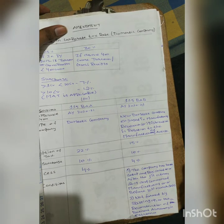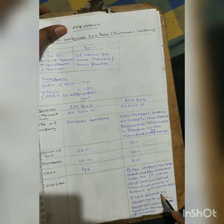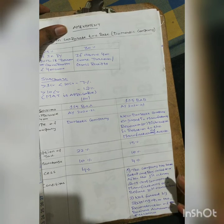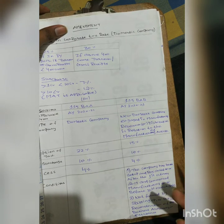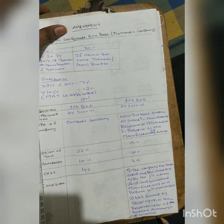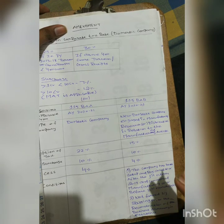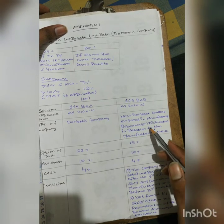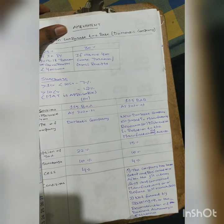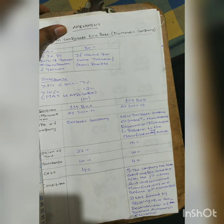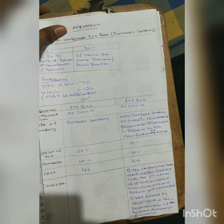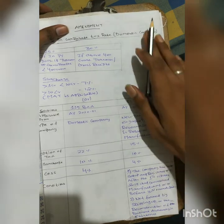The company should not be formed by splitting up (i.e., de-merger) or by internal reconstruction of a business already in existence. The manufacturing, research and development, or distribution activity must be a new setup and not formed through internal reconstruction.